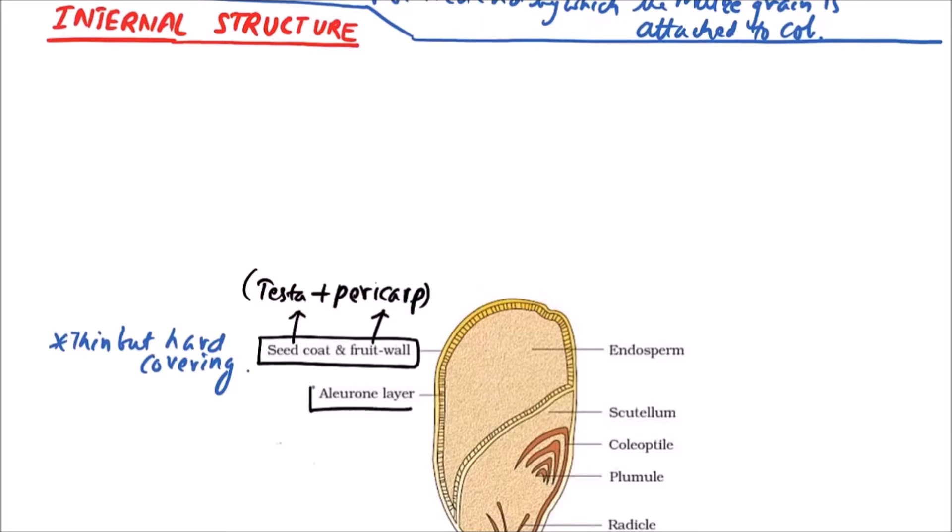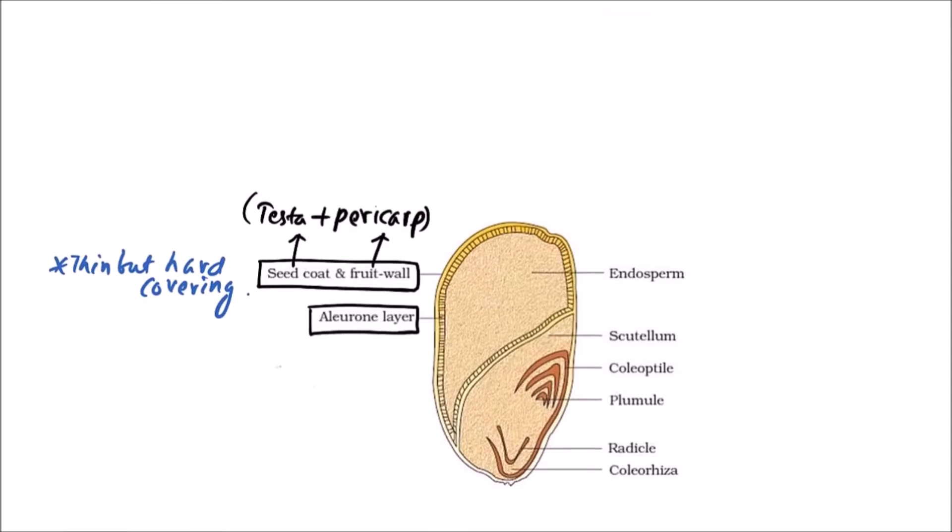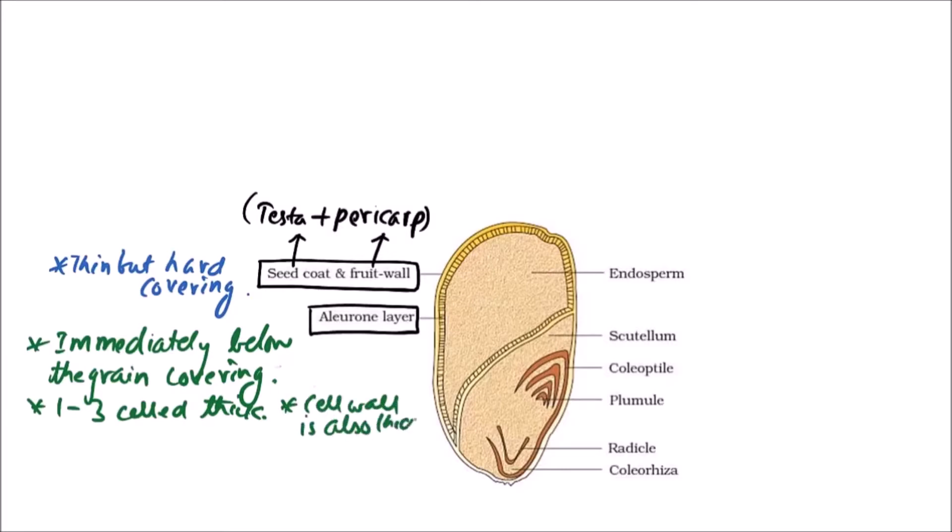This aleuron layer is immediately below the grain covering. It is one to three cells thick and cell wall is also thick. The cells are having thick cell walls. Then the cytoplasm, the cytoplasm of cells of aleuron layer is dense and filled with aleuron or protein grains that produces enzymes during the process of germination.